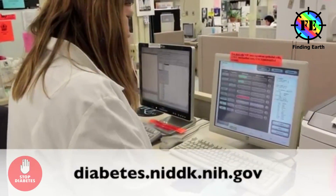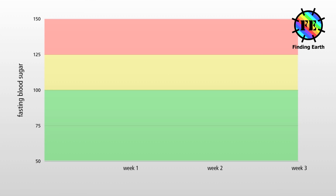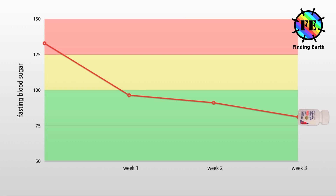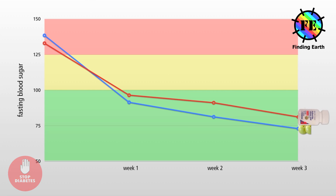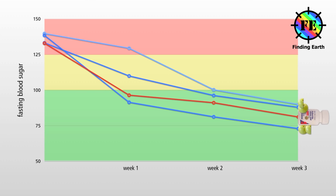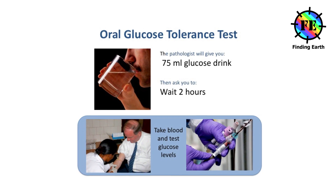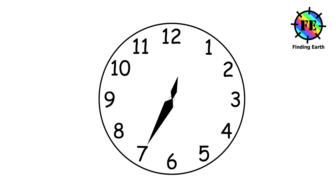An A1C of 6.5 percent or higher means you have diabetes. The Fasting Plasma Glucose (FPG) test checks your fasting blood glucose levels, usually done first thing in the morning before breakfast. FPG less than 100 mg/dL is normal; 100 to 125 mg/dL means pre-diabetes; 126 mg/dL or higher means diabetes.